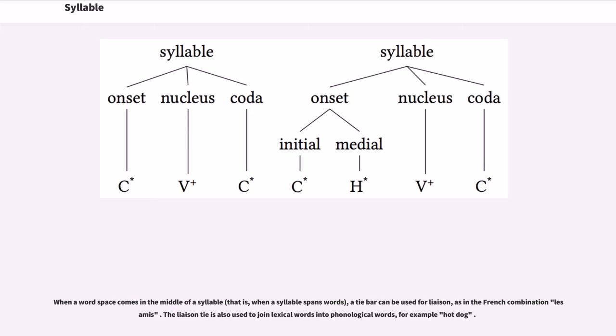When the word space comes in the middle of a syllable, a tie bar can be used for liaison, as in the French combination les amis. The liaison tie is also used to join lexical words into phonological words, for example hot dog.